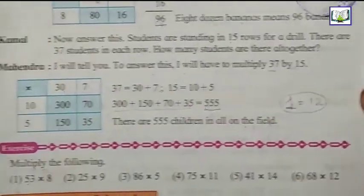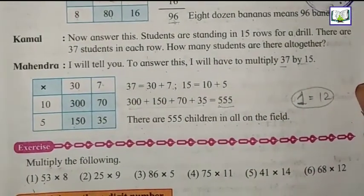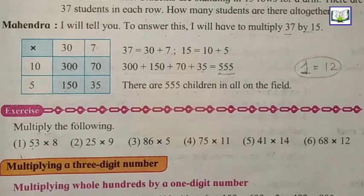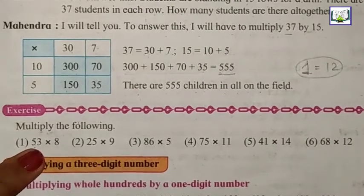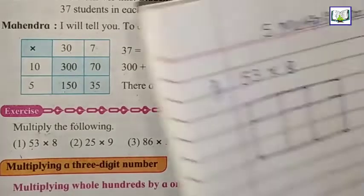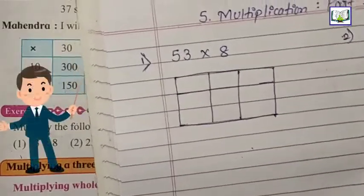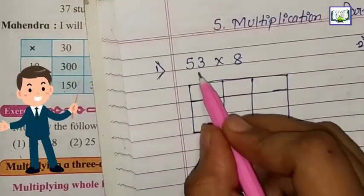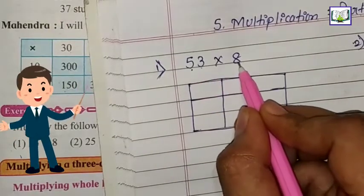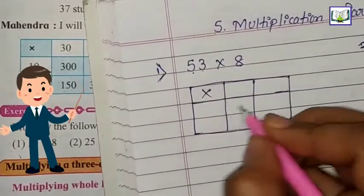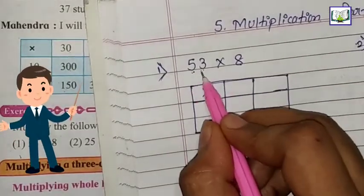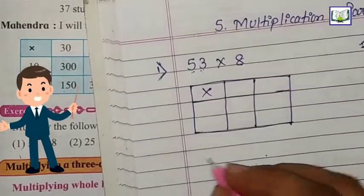We got the answer. So this is the trick which we actually used, and by taking the help of multiplication we can solve these. Exercise 1: multiply the following. First question is 53 multiply by 8. Let's solve this in your notebook. You have to draw the squares. This is the sign of multiply.